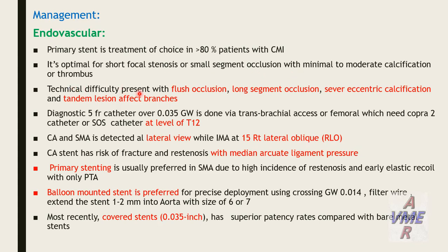Technical difficulties arise with flush occlusion, long-segment occlusion, severe eccentric calcification, and lesions affecting branches. A diagnostic 5-French catheter over a 0.035 guidewire is used via trans-brachial or femoral access, requiring a Cobra 2 or SOS catheter at the level of T12.